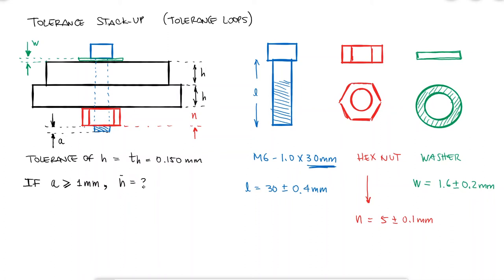A tolerance stackup consists in adding all of the dimensions in one direction and then subtracting the dimensions in the opposite direction. For example, if I start at the head of the bolt and move downward, I would find that W plus 2H plus N plus A minus L is equal to 0. If I solve for H, I find this simple expression for the average of the dimension H.